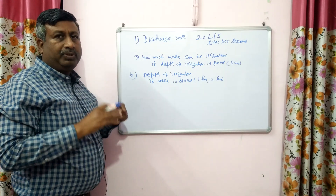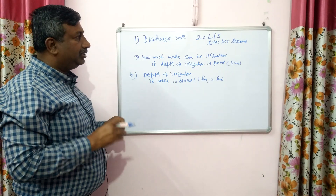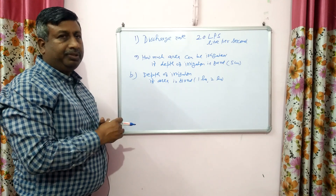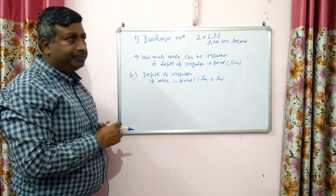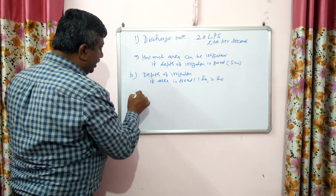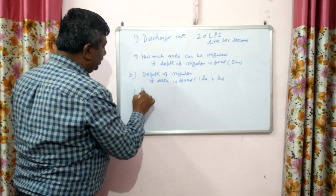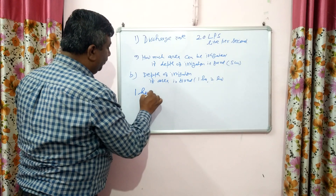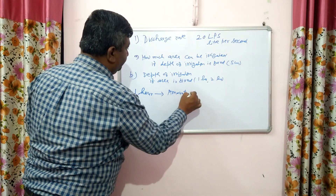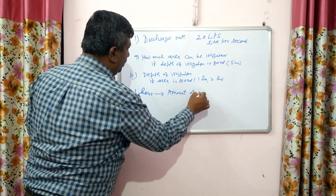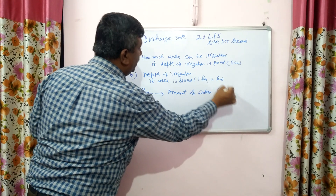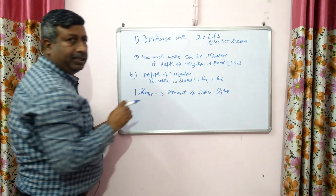This depends upon what is the discharge rate and what is the time for which the canal or tube well runs. In such type of question, first of all calculate how much water is obtained in 1 hour — what is the amount of water in 1 hour in litres, because the discharge rate is given in litres.